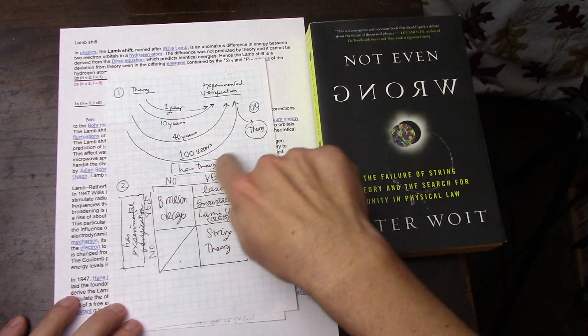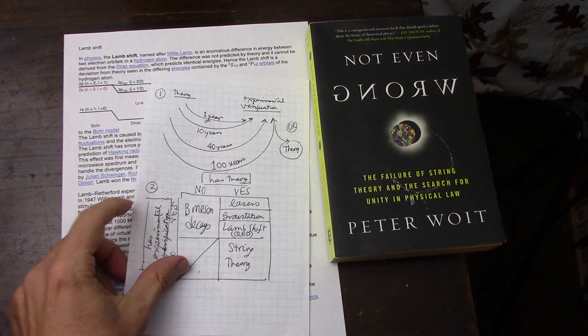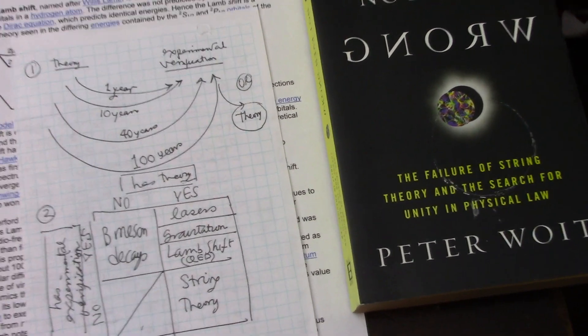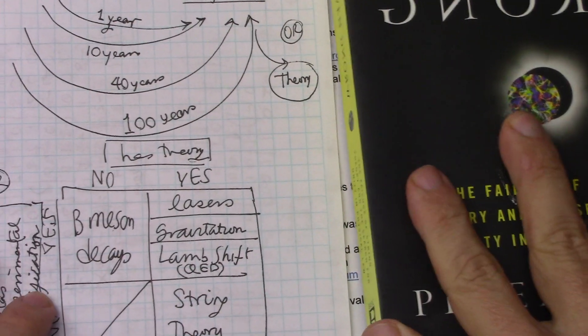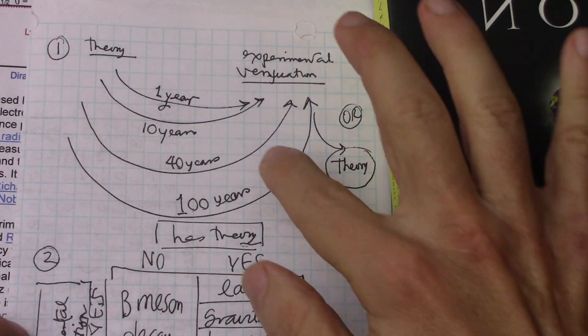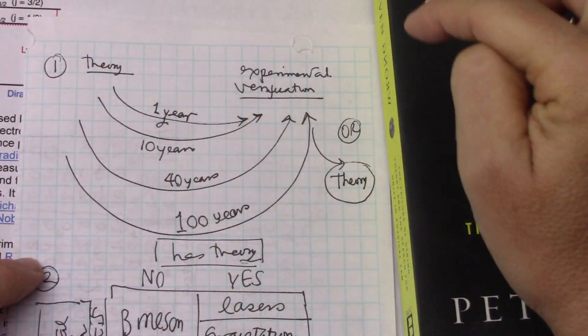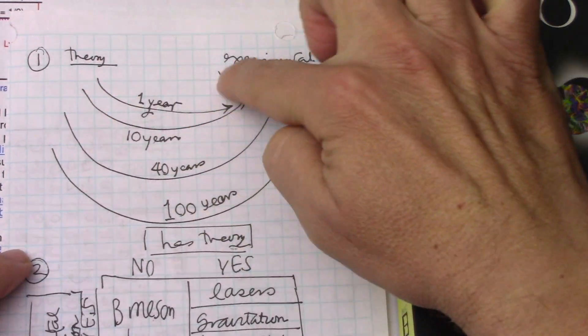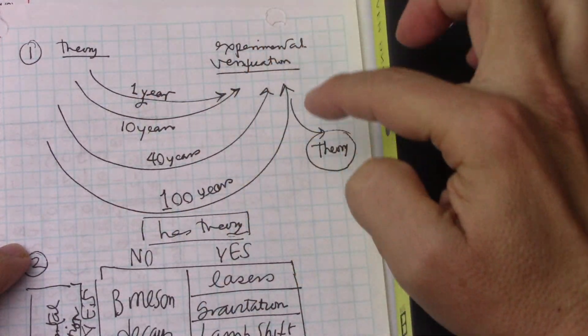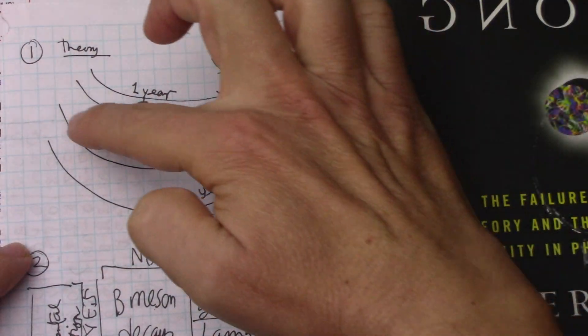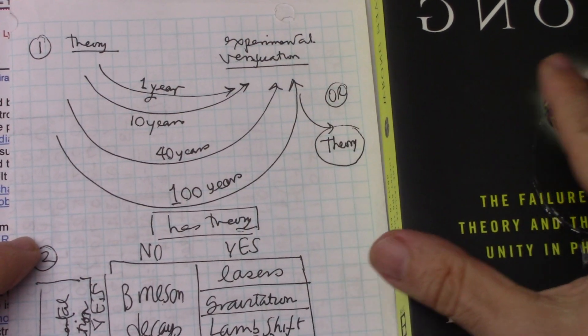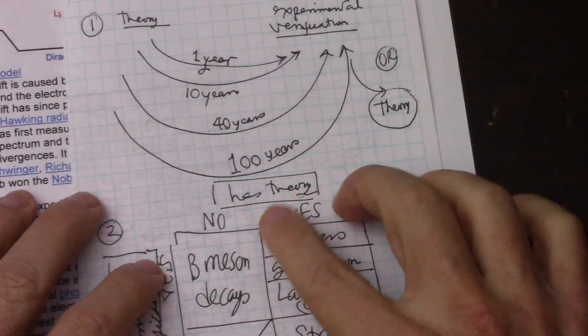So the first point is really the difference between when some theory is laid out and when there is experimental verification for it. That can be a year, 10 years, 40 years, 100 years, and can be from a short period of time by our standards to a long period of time.